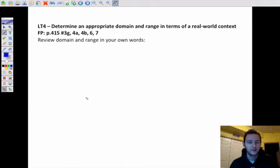Okay, learning target 4 is determine an appropriate domain and range in terms of a real-world context. We kind of know what domain and range are already, so the first thing that I want you to do is just review them, kind of what you know about them in your own words. It doesn't necessarily have to be in terms of a real-world context just yet, but go ahead and just write down what you know already, and then we'll kind of come together, and I'll give you my thoughts as well, so go ahead and hit pause.